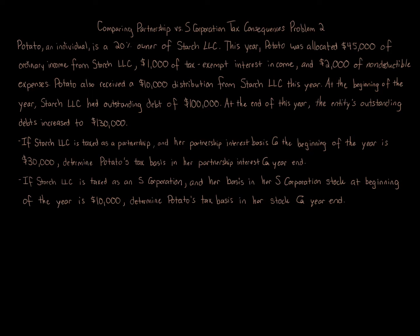The key is that you make sure you watch the partnership tax general concepts problems first, and then watch the S-Corporation tax concepts general concepts videos as well. We've got two different questions being asked. I'll call them Variation 1 and Variation 2. Variation 1 covers what Potato's basis would be if it's an LLC taxed as a partnership, and Variation 2 if it's an S-Corporation. The beginning basis amounts also change — $30,000 and $10,000 respectively. Variation 1 assumes it's an LLC taxed as a partnership with an initial basis of $30,000.